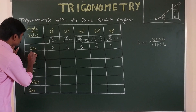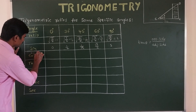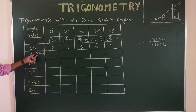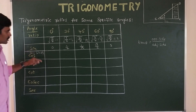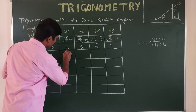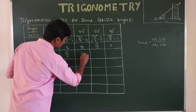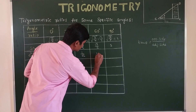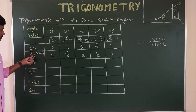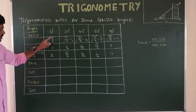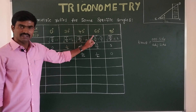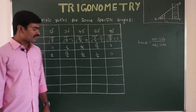For cosine values, simply write the sine values in reverse order. So: cos 0°=1, cos 30°=√3/2, cos 45°=1/√2, cos 60°=1/2, cos 90°=0.